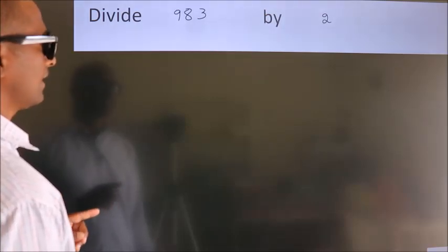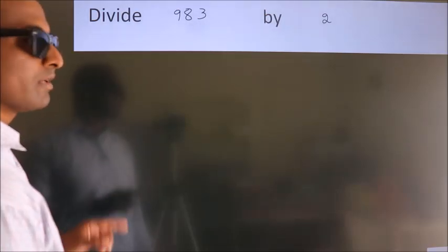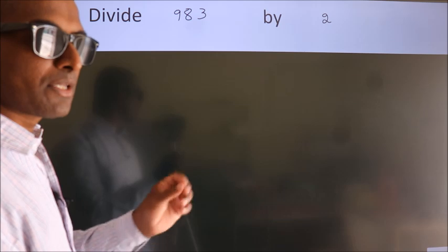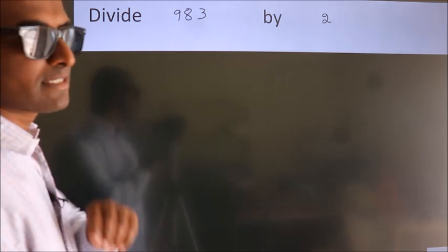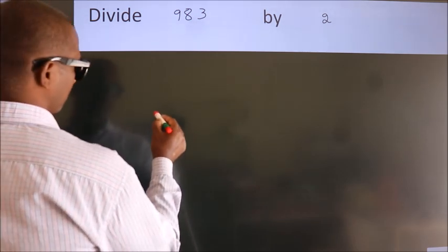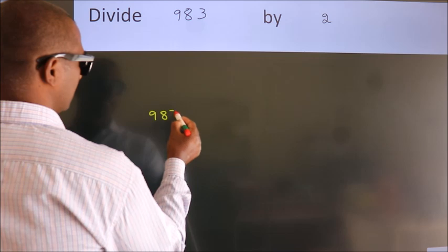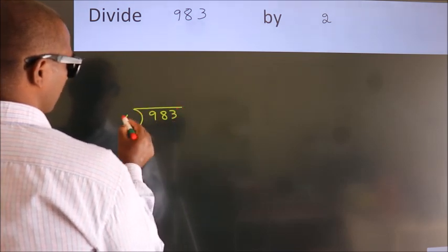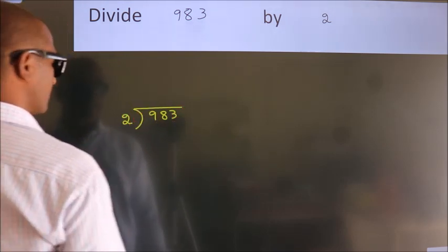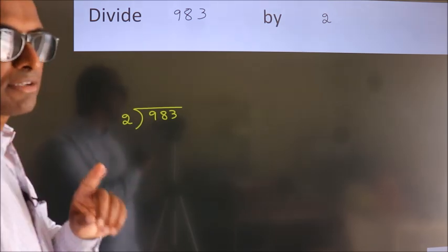Divide 983 by 2. To do this division we should frame it in this way. 983 here, 2 here. This is your step 1.